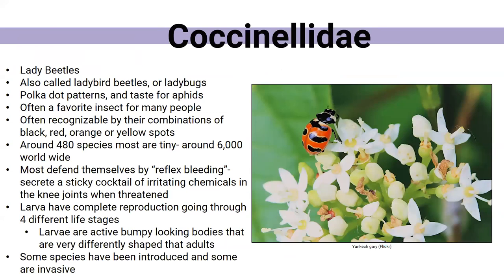This is the Coccinellidae family — these are your lady beetles, also called ladybird beetles or ladybugs. This is usually one of the favorite insects for people because most aren't scared of them. They have polka dot or stripe patterns and eat a lot of aphids — sometimes as many as 5,000 aphids in their lifetime, which is very helpful. They're often recognized by orange, yellow, reddish, or black spots and patterns. There are about 6,000 species worldwide; in North America we have about 480, though some of them are invasive.